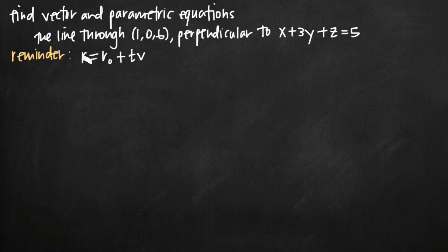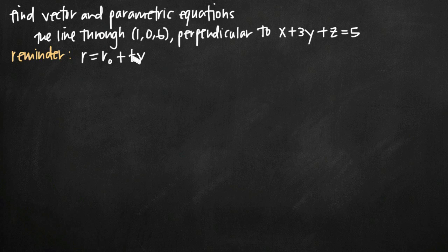As a reminder, we're going to be using the formula r equals r sub 0 plus t times v. We need to plug in vectors for r sub 0 and for v, and t is going to remain as a parameter value in our equation for r. You can derive this formula as a result of the definition of vector addition, or the triangle law.